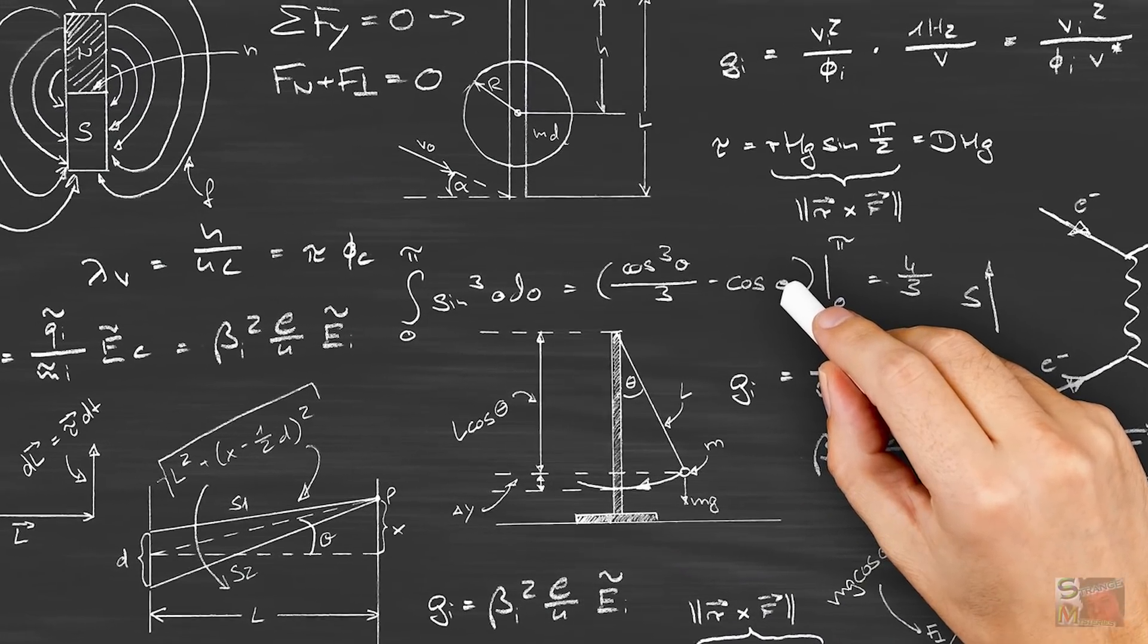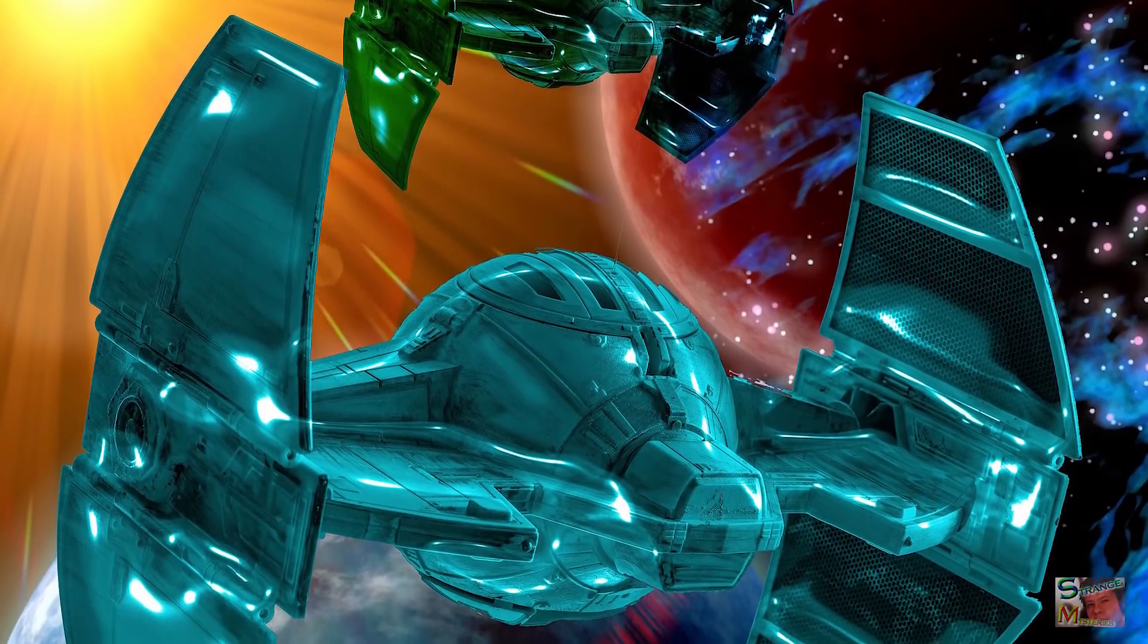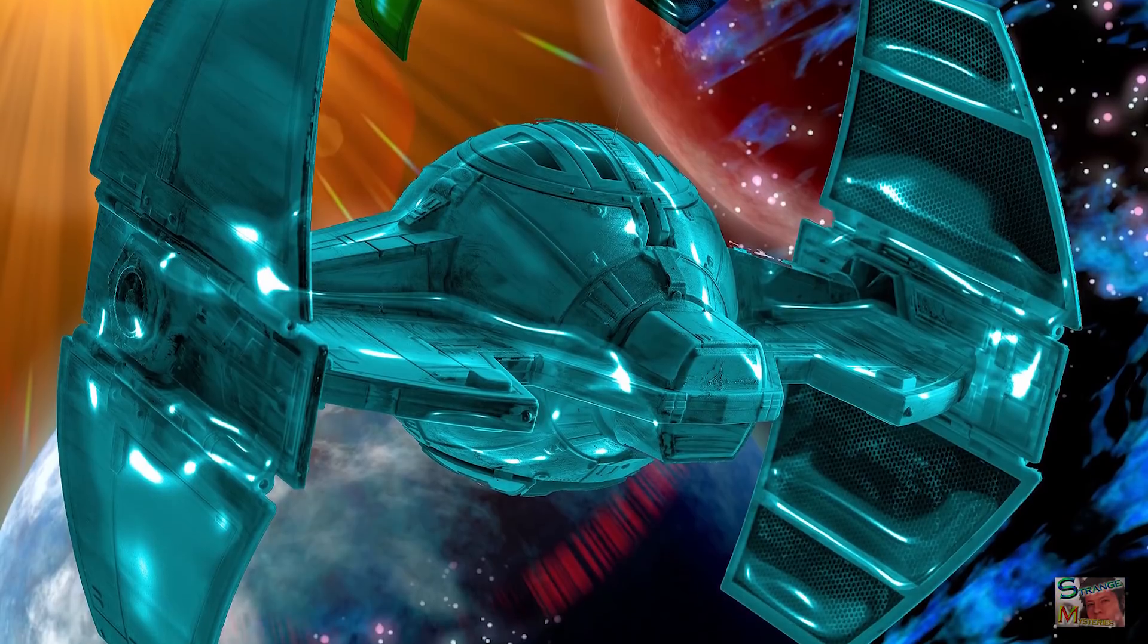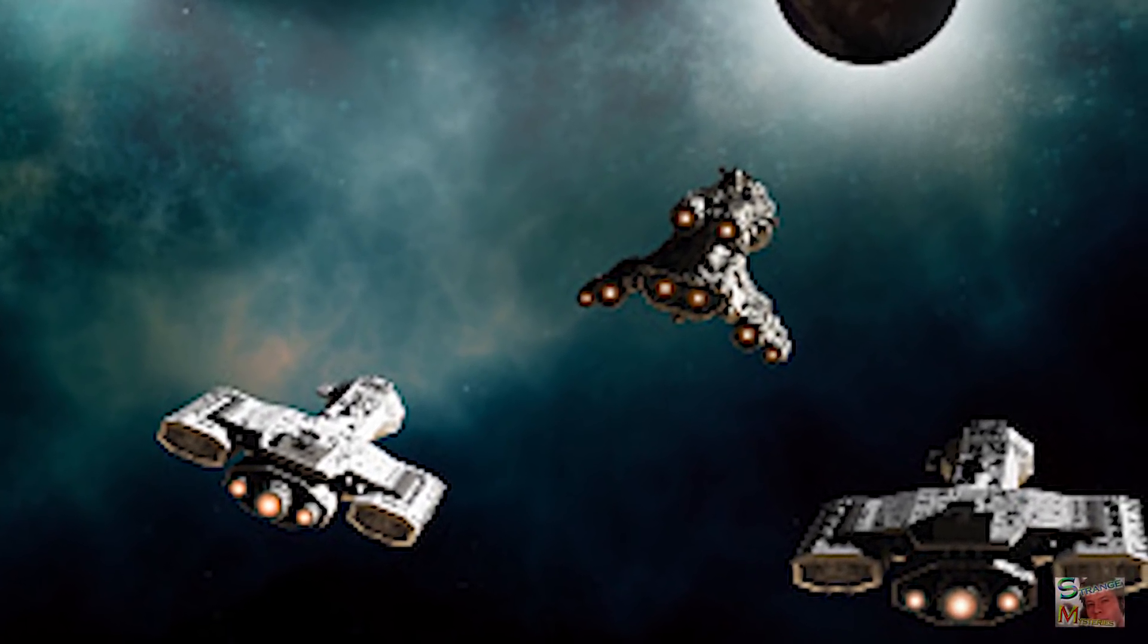But what if we could cheat physics? What if we found a secret backdoor that allowed us to traverse the universe as we saw fit? How would this work? Let's find out as we explore three ways man could travel faster than light.